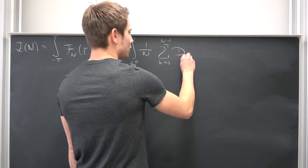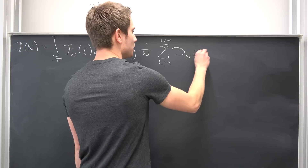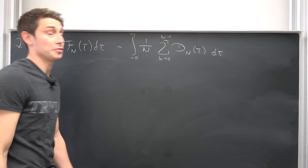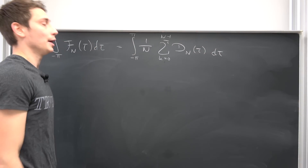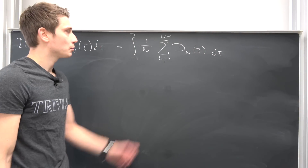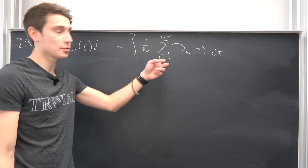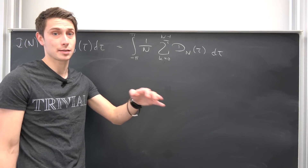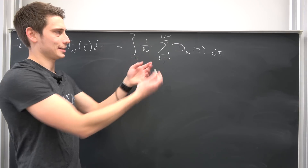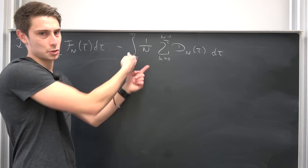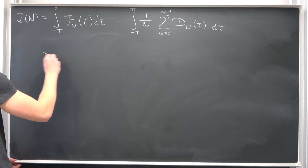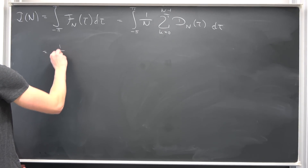Of the Dirichlet kernel of the kth degree, integrated with respect to tau. Why not bring this 1 over n to the outside? Also, this is just a finite summation, so we can just interchange those two — it's not a matter of limits. So we are going to get 1 over n times the sum running from 0 to n minus 1.